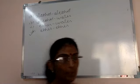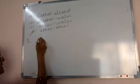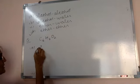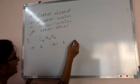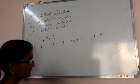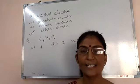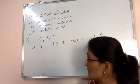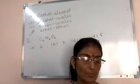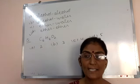Next question: how many isomers are there with the formula C6H6O2? Options are 2, 3, 4, or 9. How many isomers are possible with formula C6H6O2?